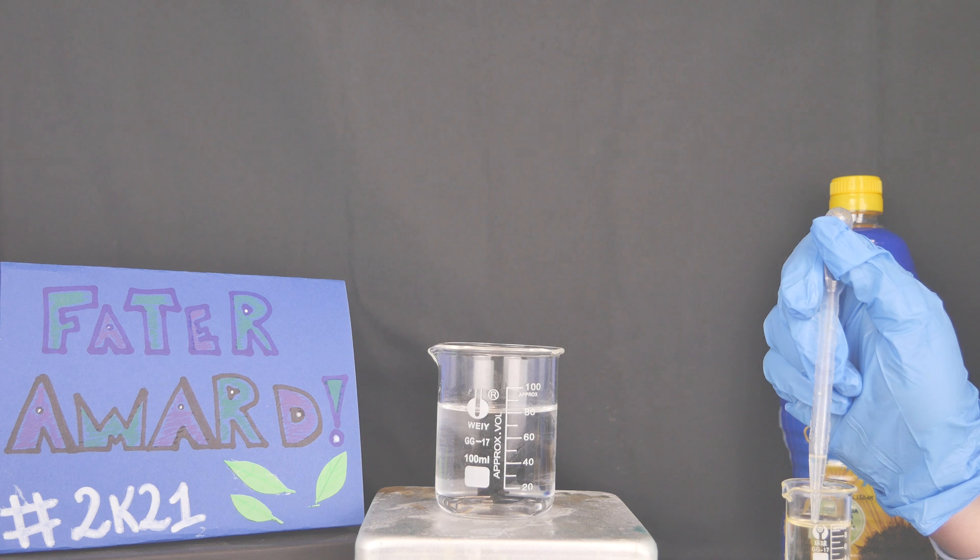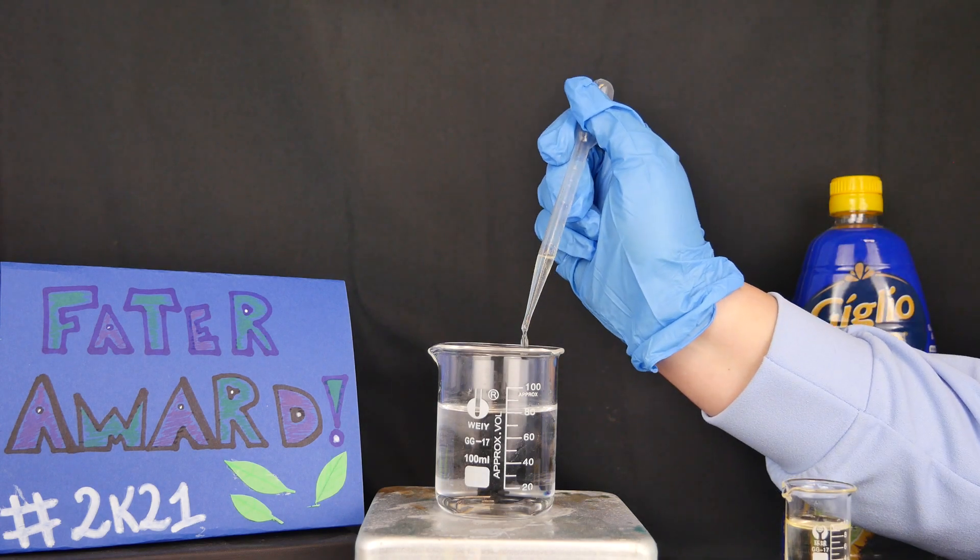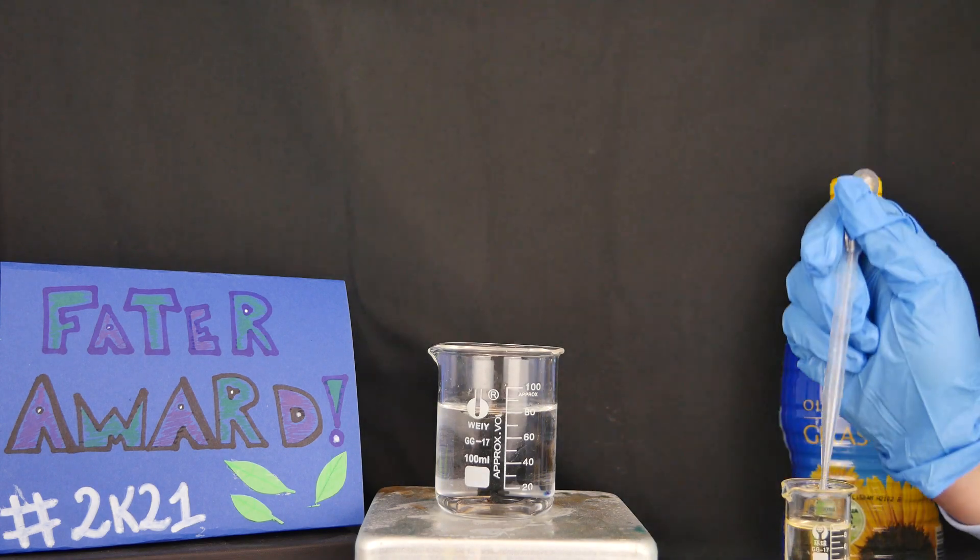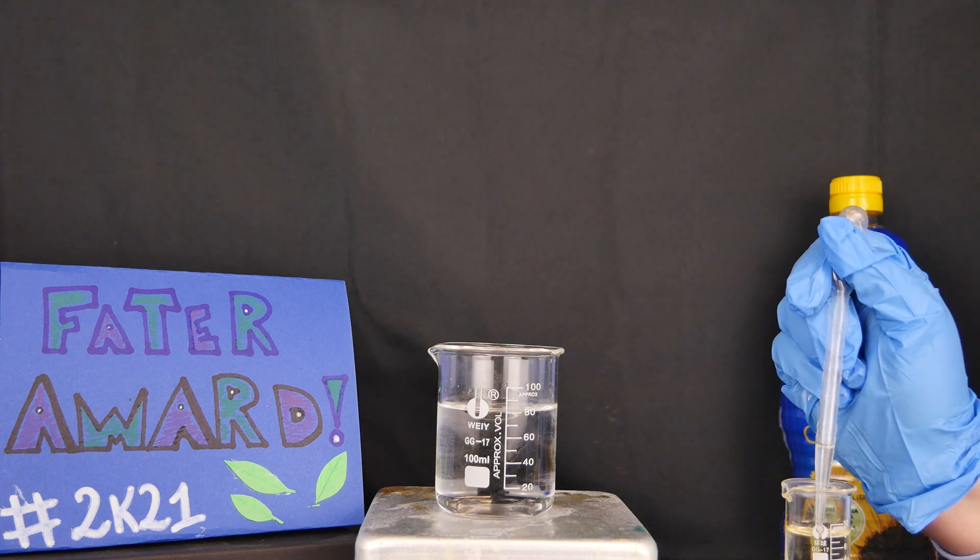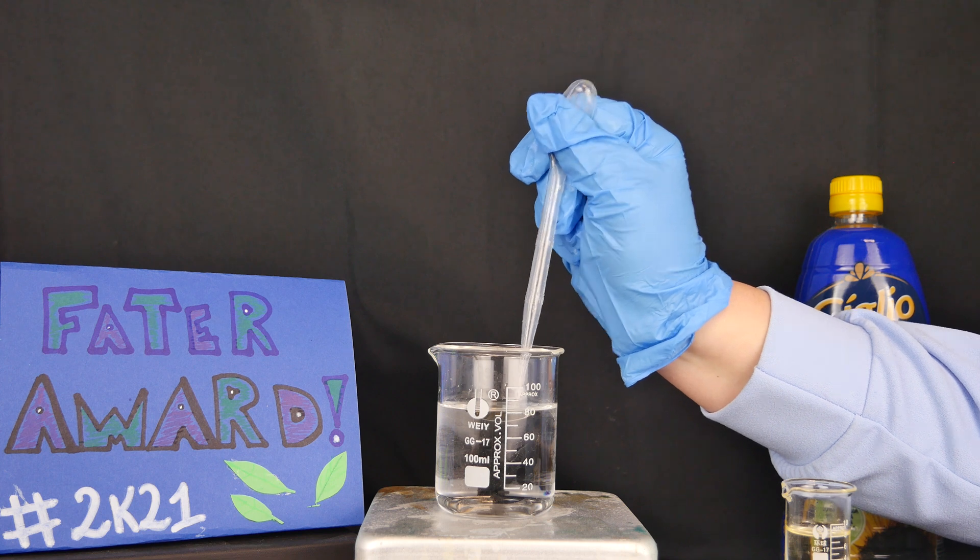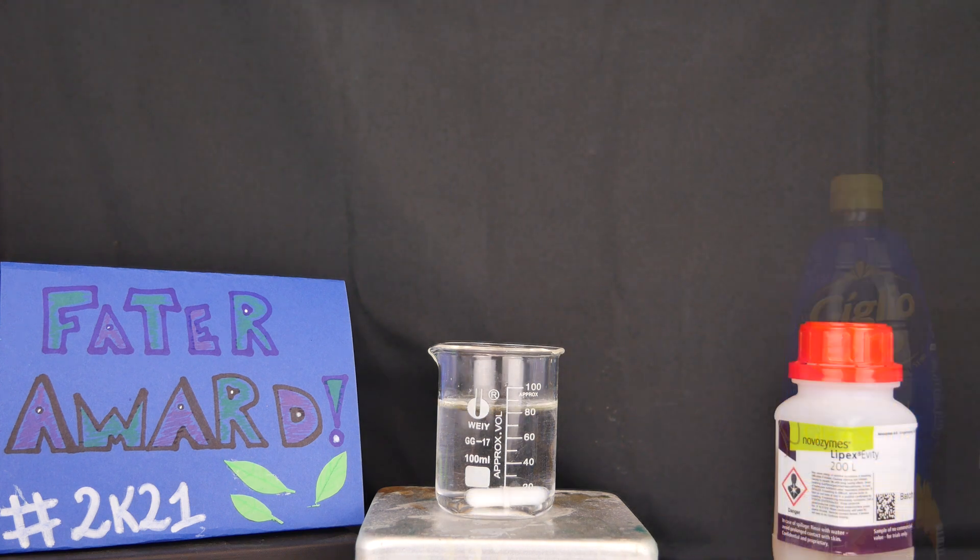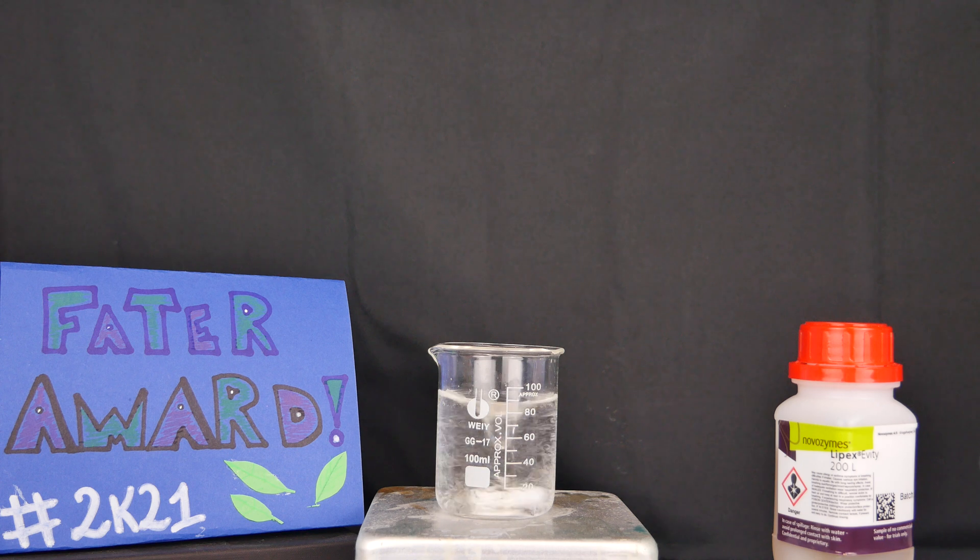To start, add some oil or fat to a beaker containing tap water. In this way we are simulating the greasy condition in dirty clothes. Furthermore, in our case we have vigorously stirred our mixture to recreate the washing condition that's set up in a classic washing machine.